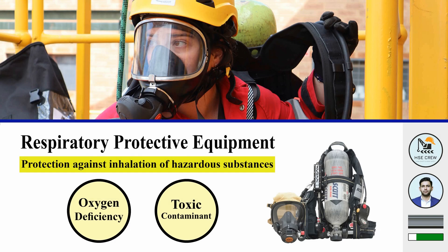Hello, welcome to my YouTube channel HSC Crew. In this video I will talk about respiratory protective equipment. The main topics I am going to cover are: types of respiratory protective equipment, how to choose suitable respiratory protective equipment according to working conditions and environment, and specifications of different breathing apparatuses. Respiratory protective equipment is used to protect against inhalation of hazardous substances — usually in two situations: oxygen deficiency, and toxic contaminants present in the environment.